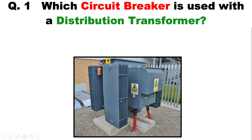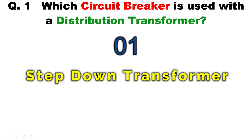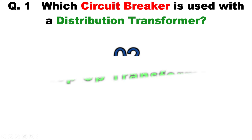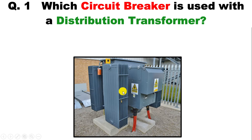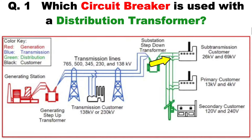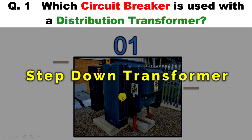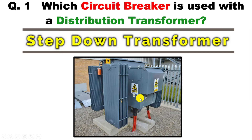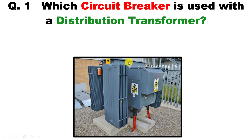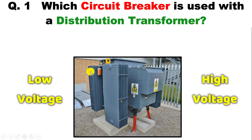Before moving towards the answer, I want to explain something. Transformers are generally used to either step down or step up voltage. Distribution transformers are used to provide power supply to our homes, so all distribution transformers are step-down transformers — they convert high voltage into low voltage. On the primary side voltage is high and on the secondary side voltage is low.